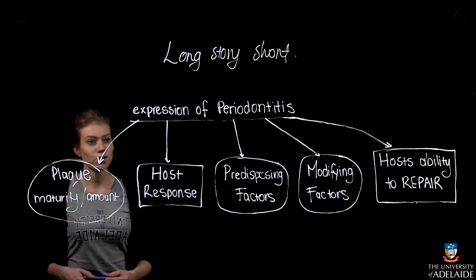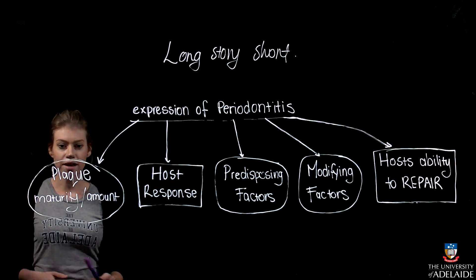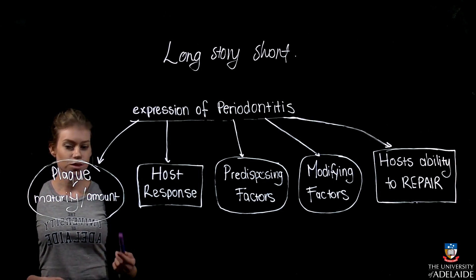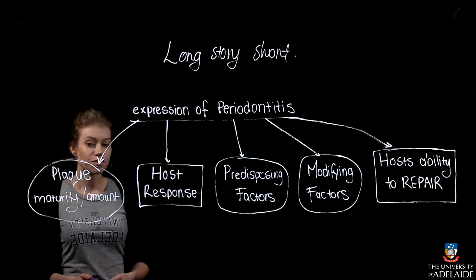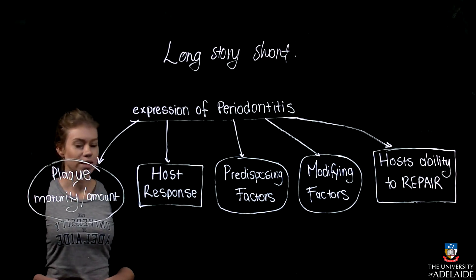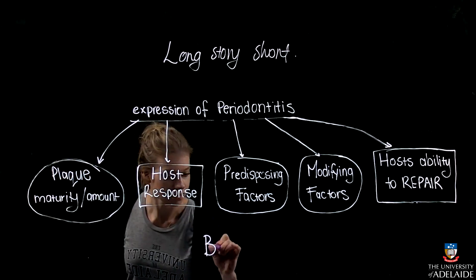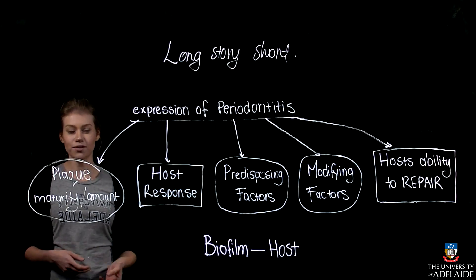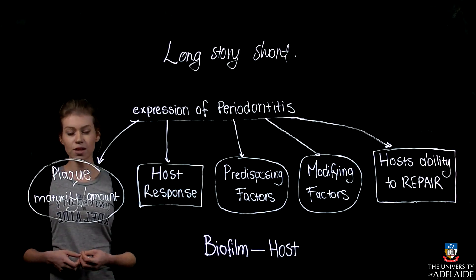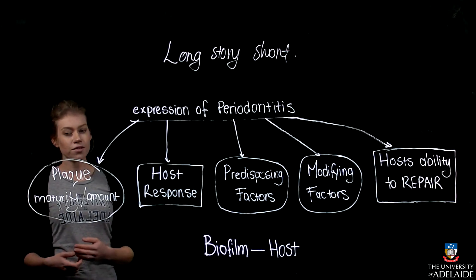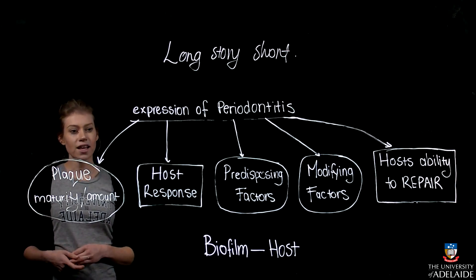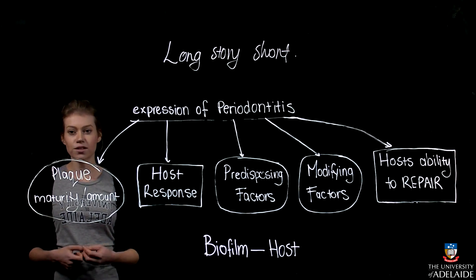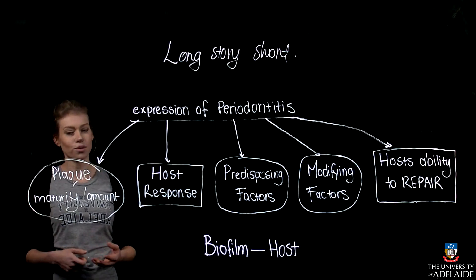The expression of periodontitis is due to the maturity and amount of plaque biofilm present, the host response, predisposing factors, modifying factors, and the host's ability to repair itself. Some people have high amounts of biofilm with a regulated host response, while others have minor biofilm but an exaggerated host response, making them more susceptible to developing advanced forms of periodontitis.